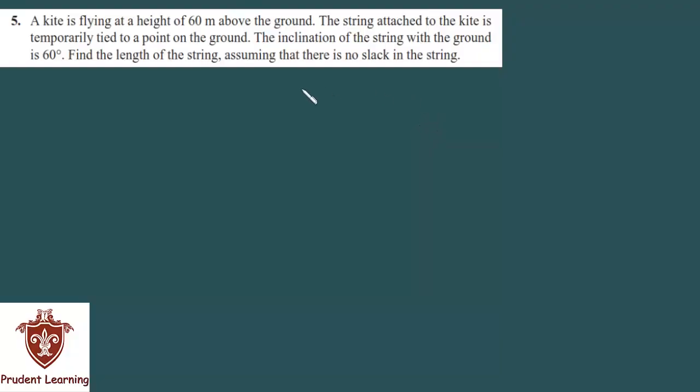All right, let us move on to the fifth question of the NCERT exercise 9.1. The question says: a kite is flying at a height of 60 meters above the ground. The string attached to the kite is temporarily tied to a point on the ground. The inclination of the string with the ground is 60 degrees. Find the length of the string assuming that there is no slack in the string.